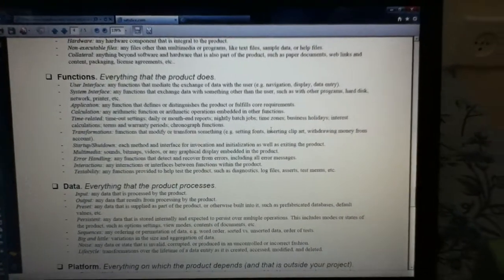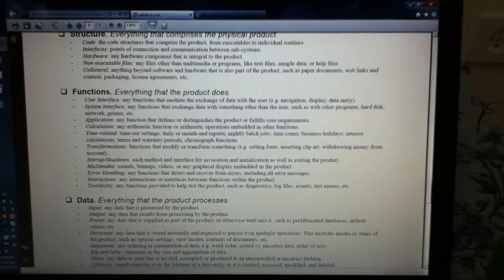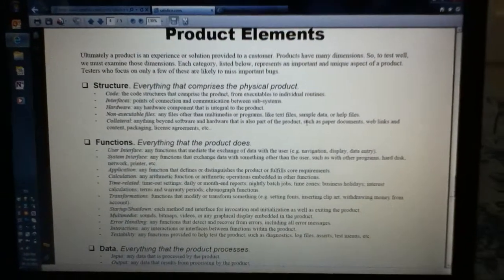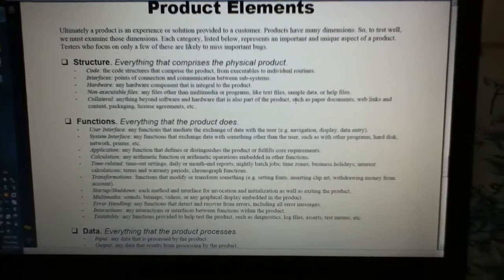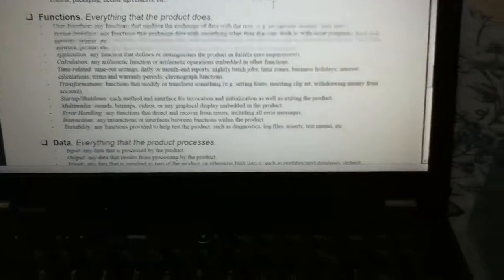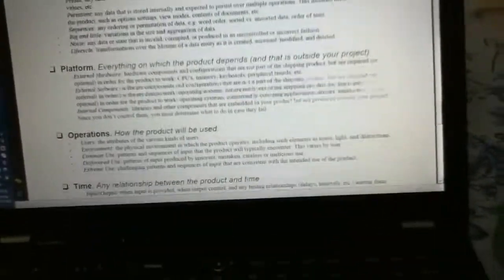this is the test strategy model by James Bach, then we have these six options: structure, functions, data, platform, operations, and time.